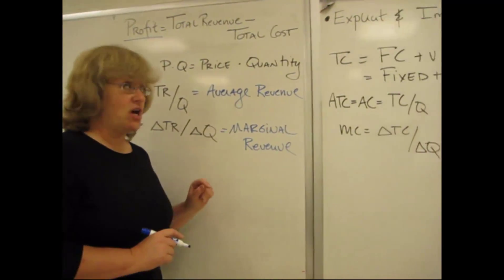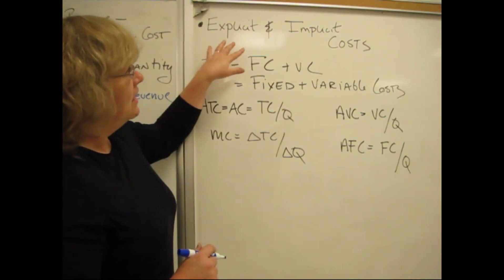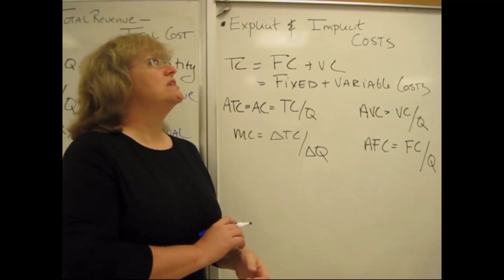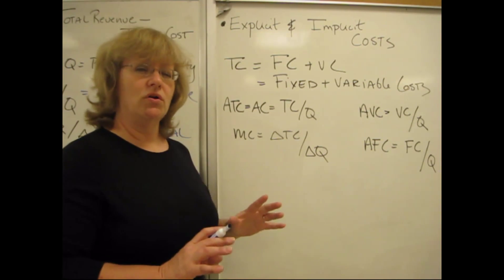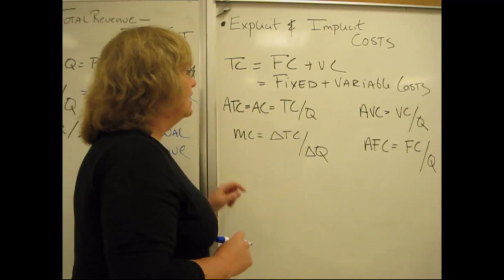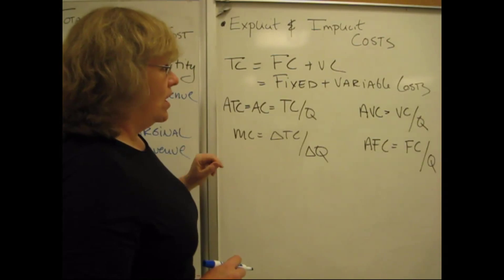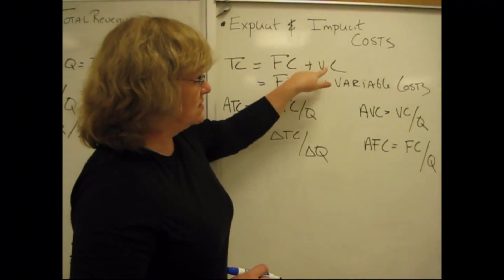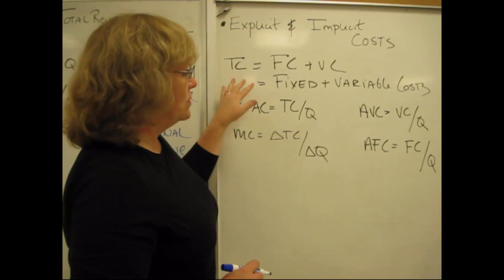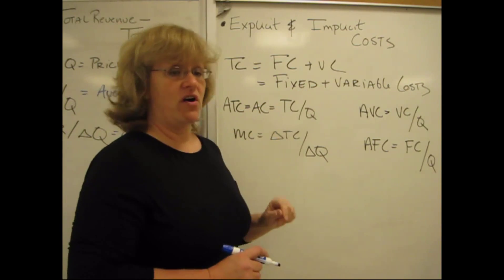Now let's go over here and talk about costs for a minute. I've got up at the top of the board explicit versus implicit costs. We're going to hold off on that idea for just a moment. Underneath that though, we have TC total cost equals FC plus VC. Total costs are equal to fixed plus variable costs.